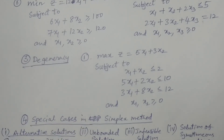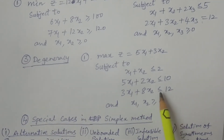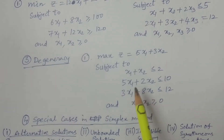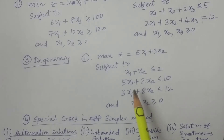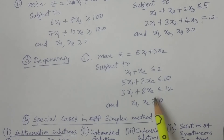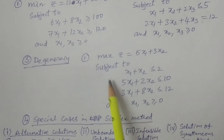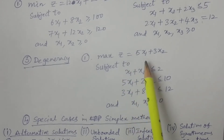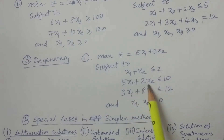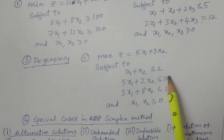One more case is degeneracy. It will not be explicitly stated in the examination — the problem will just be given, and if degeneracy occurs during solving, you have to handle it and continue. The degeneracy problem is: maximize z = 5x1 + 3x2, subject to x1 + x2 ≤ 5, x1 + 2x2 ≤ 10, and 3x1 + 8x2 ≤ 12. This is a problem where degeneracy will occur.